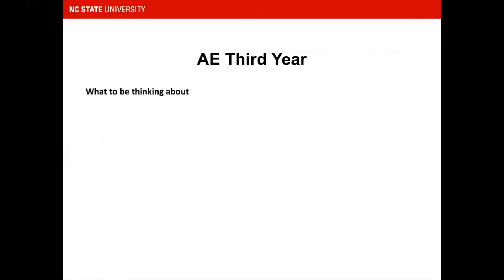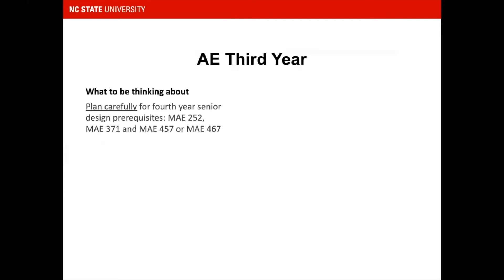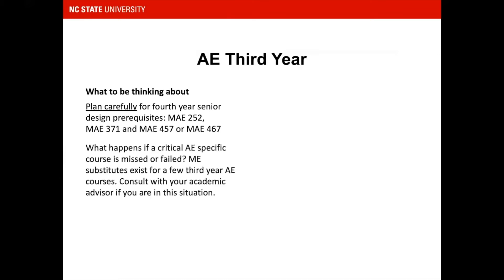What should you be thinking about in your third year? Plan carefully to make sure prerequisites are complete for the fourth year's senior design. AE senior design prerequisites are MAE 252, MAE 371, and one of the flight/space electives, MAE 457 or MAE 467. If you miss or fail a critical-path AE-specific course, there are mechanical engineering substitute courses for a few third-year AE courses — consult with your academic advisor if you are in this situation.